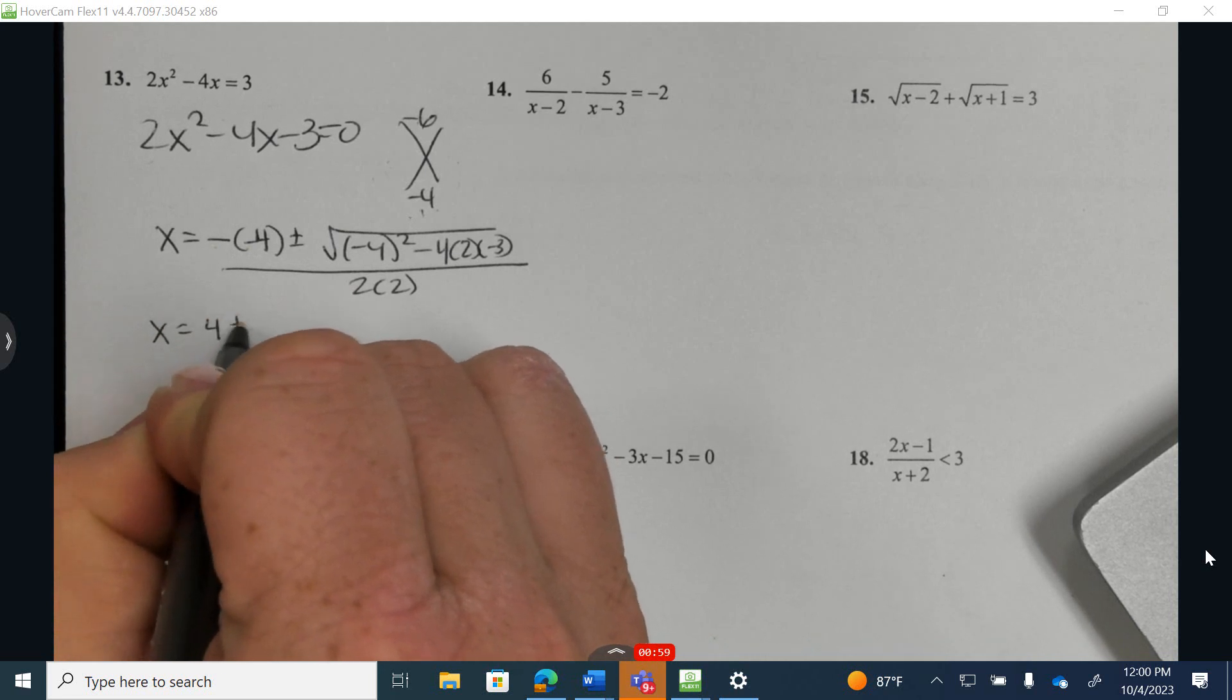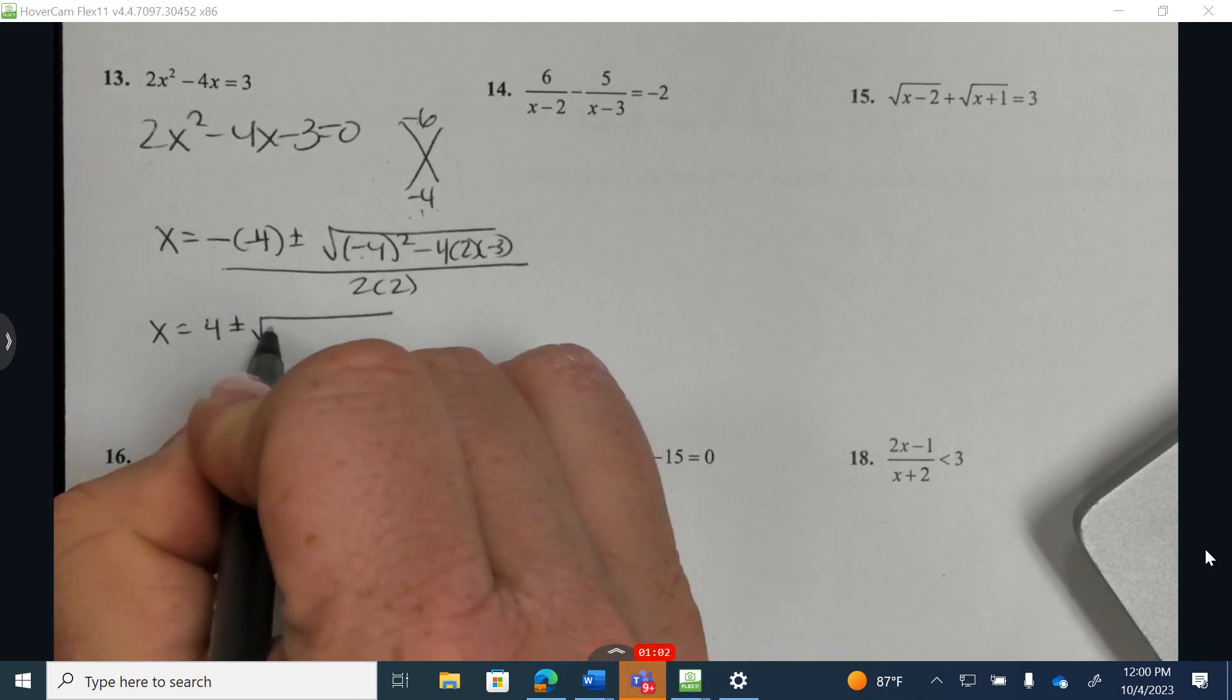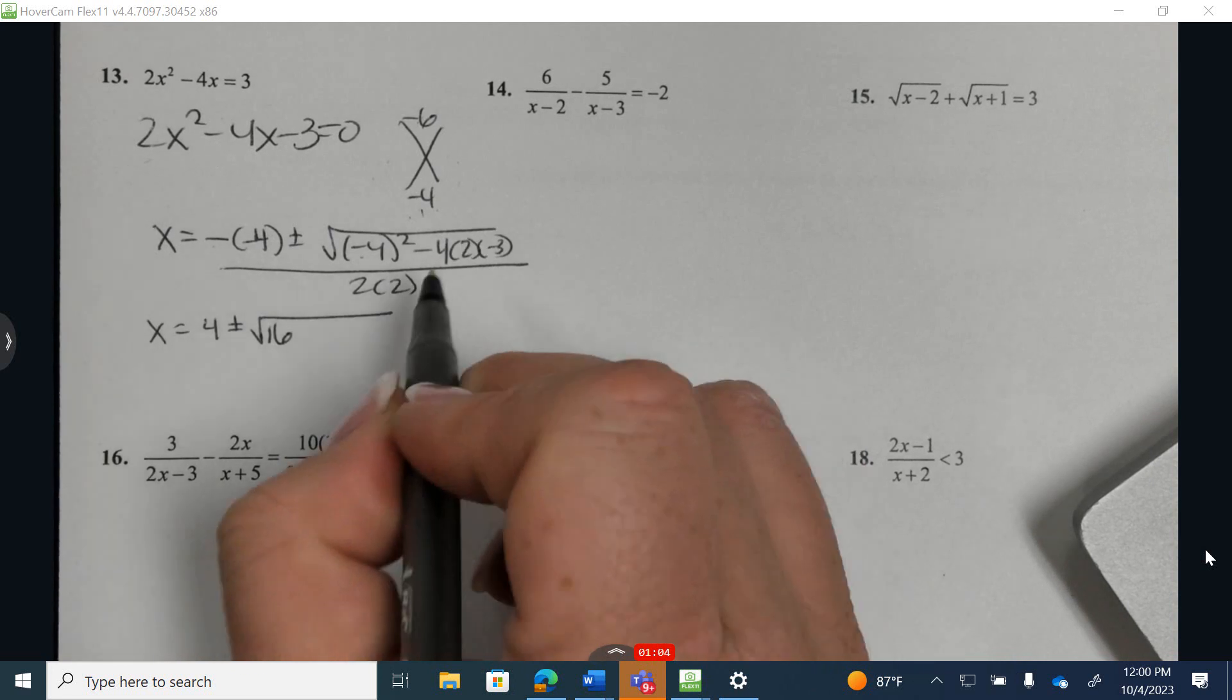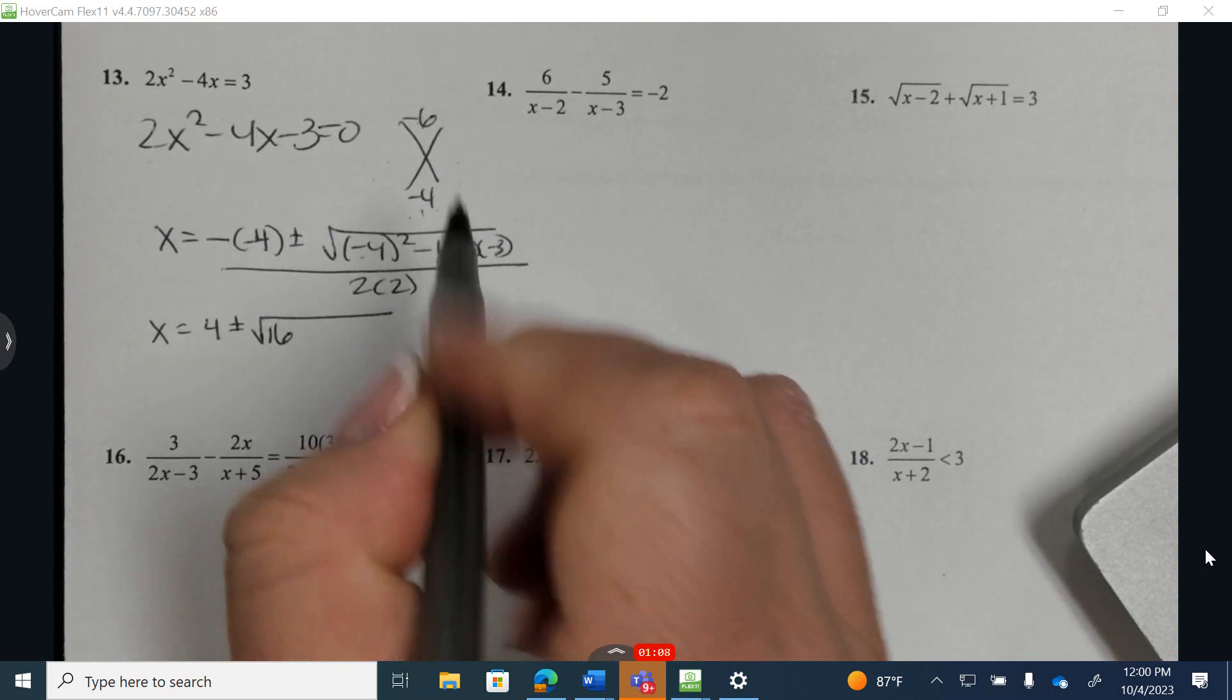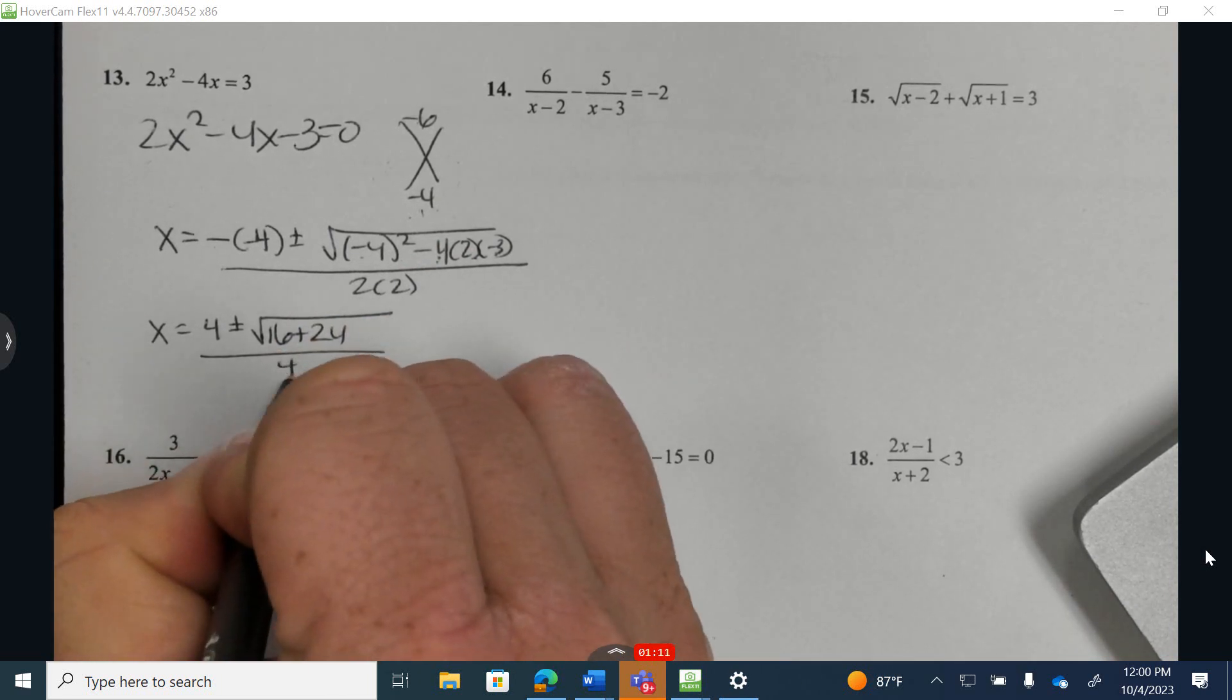2 negatives makes a positive. Negative 4 squared is 16. We have negative 4 times negative 3 is 12. 12 times 2 is 24, all over 4.